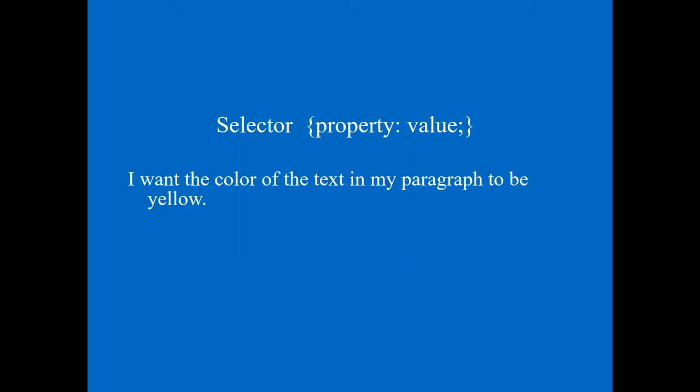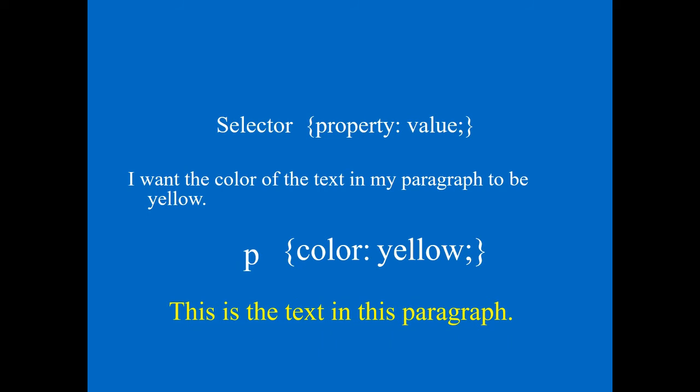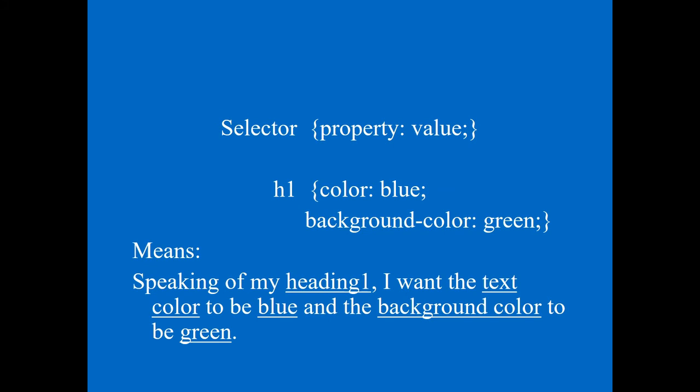For example, I want the text color in my paragraph to be yellow. I write: p { color: yellow; } The output you will see is the paragraph text displayed in yellow color. The text is in the paragraph, and because of this CSS rule it appears in yellow.